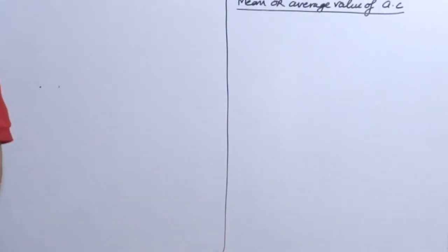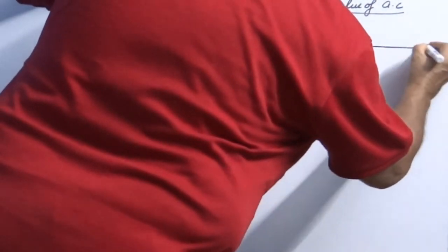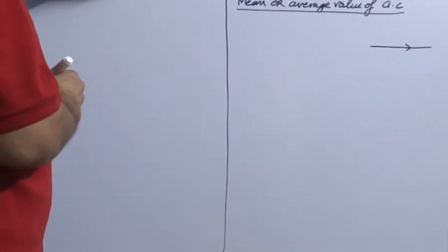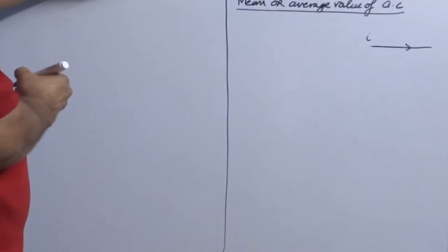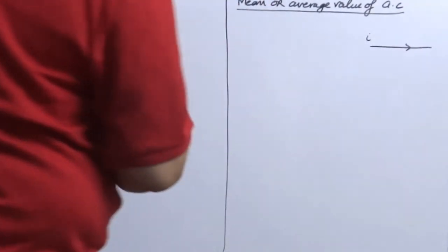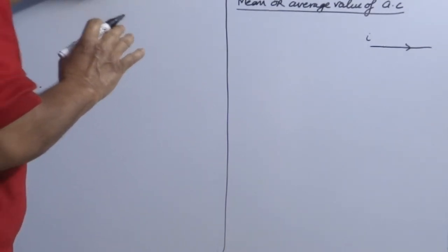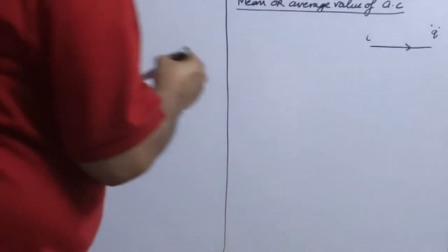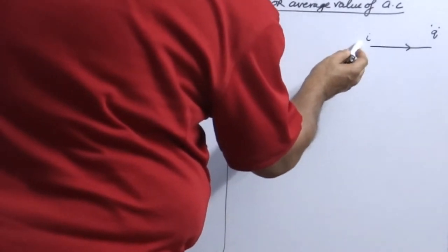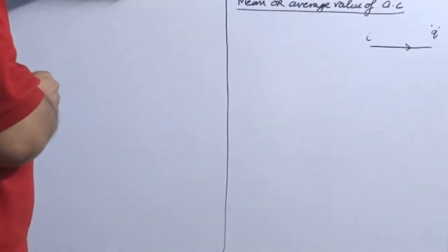What we are doing practically here is comparing the amount of charge. I pass some magnitude of alternating current through a conductor for some time; there will be some amount of charge that passes and flows through the conductor. Let the amount of charge flowing be Q. Now I am trying to find: instead of AC, what value of DC in the same time should pass through it so that the same amount of charge passes through the conductor.